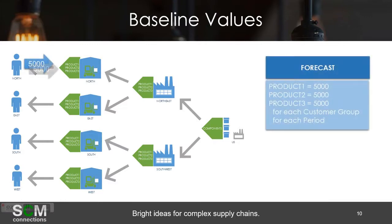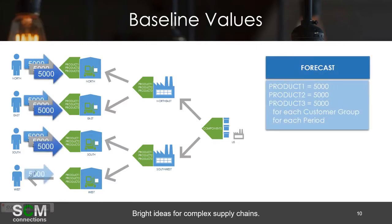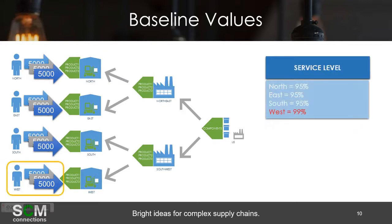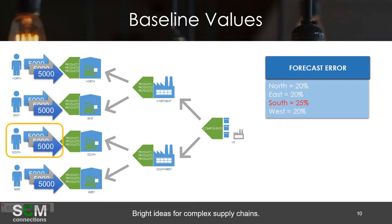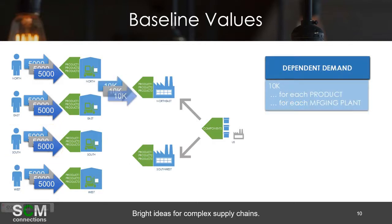As far as the baseline values are concerned, products 1 through 3 have a 5,000 forecast from each customer to their respective warehouse for each period. The service level is 95%, with the exception of the West which is 99%. The forecast error is 20% across the board, with the exception of the South customer group which is 25%. These numbers I'm going through pretty quickly — you'll probably want to come back to this slide during the demo to understand the data better.